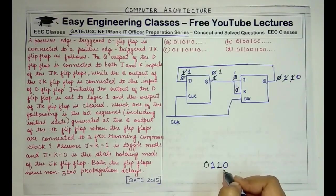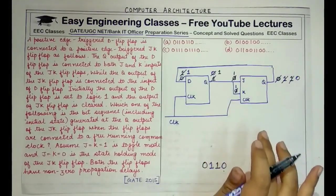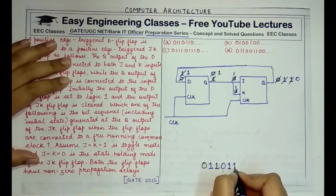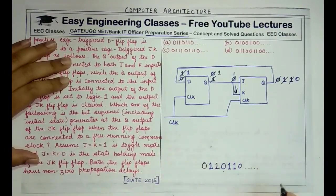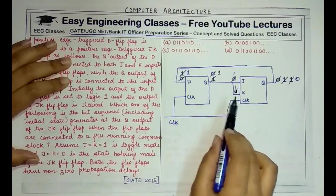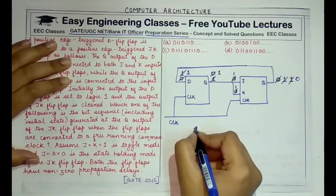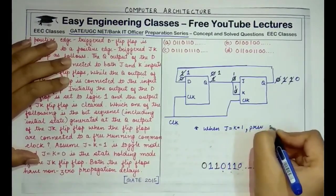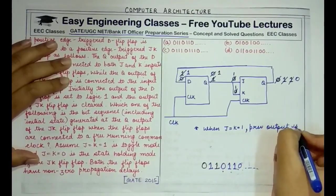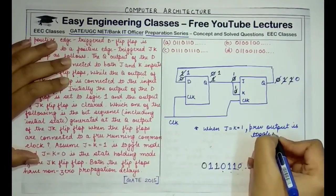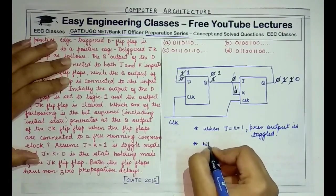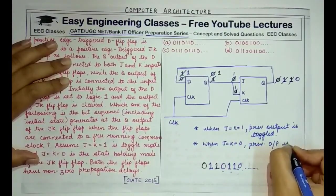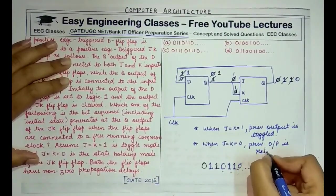If you keep executing this arrangement, the sequence formed is 0, 1, 1, 0, 0, 1, 1, 0, and so on. Key points: when J=K=1, the previous output is toggled — from 0 it becomes 1 and from 1 it becomes 0. When J=K=0, the previous output is retained in the next cycle.